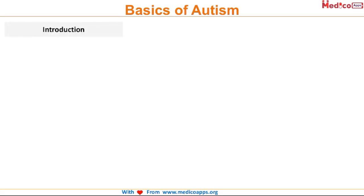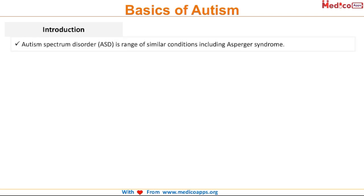Before we move on to the science and symptoms of autism, we have to understand that earlier autism was considered to be a single disease. However, with time we have understood that it is not a single disease. Rather, we now know that it is a spectrum disorder. So, now we call it autism spectrum disorder, which includes a range of similar conditions — some are milder forms of autism, some are more severe forms. The symptoms vary along a spectrum, and this also includes Asperger's syndrome.